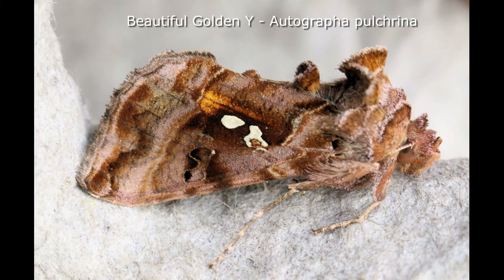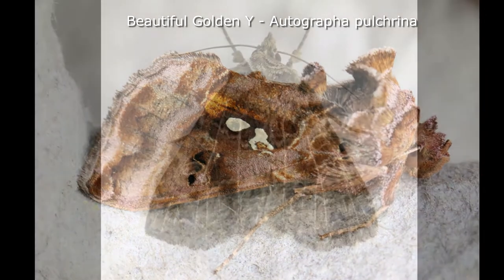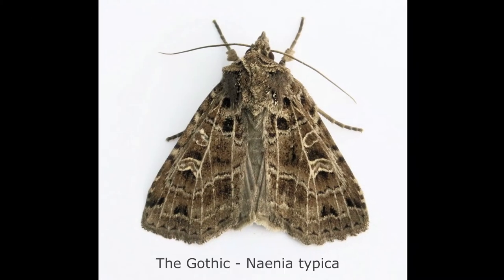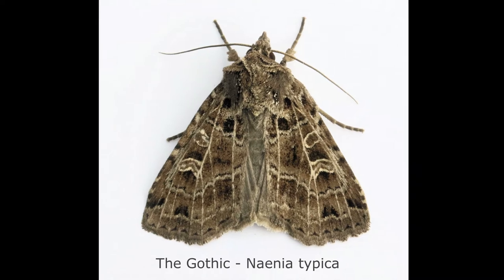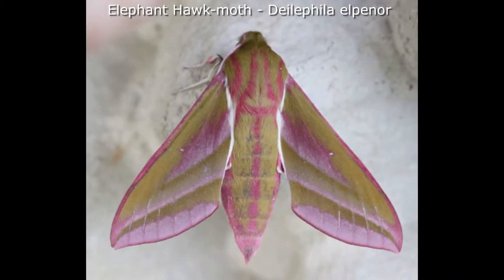Firstly, it's difficult to correctly identify a moth if you don't know the anatomy of the moth. Once you've learnt the anatomy you'll be able to look for the key features. This will be a great step forward in trying to get a correct identification. If you look in a moth book and it states there are small dark dashes near the termen, and if you don't know where the termen is, it's going to be very difficult.